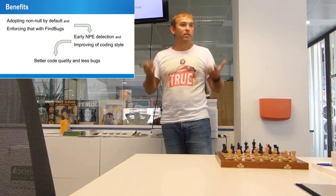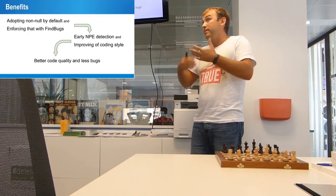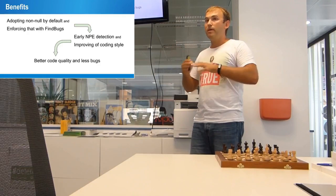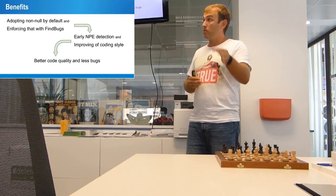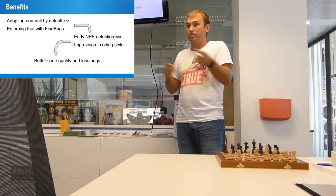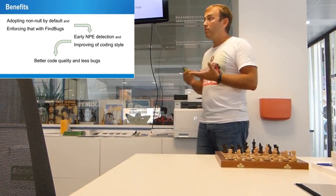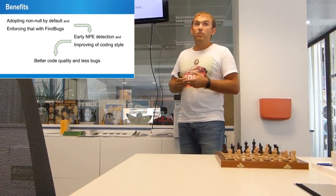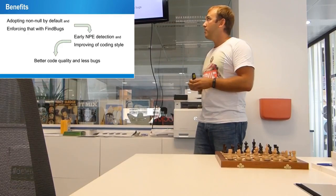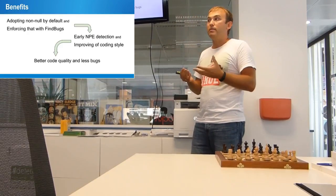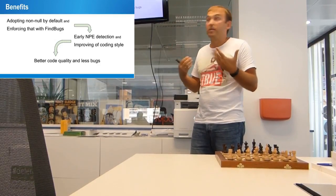What are the benefits? Since we already have an implicit non-null contract, we're now enforcing it with FindBugs. If somebody breaches the contract — assigning null to a non-null variable — FindBugs will warn you. If you add @CheckForNull, FindBugs will then flag every place where you use that variable without checking for null first. This helps detect null pointer issues earlier. More importantly, it improves coding style — developers will think twice before returning null. Maybe you return an Optional instead, or re-architect to not use nulls where unnecessary. This leads to better code quality and fewer bugs.